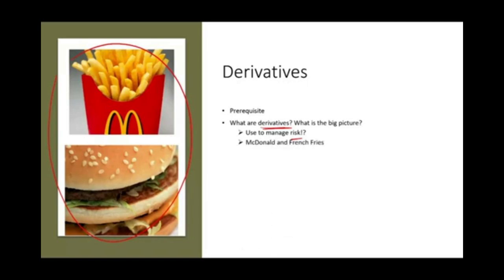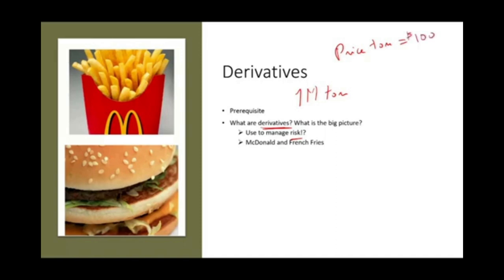Now McDonald's — let's assume, just don't quote me on the numbers, I'm just making this up — let's assume they would need 1 million tons of potatoes. That's what they need: 1 million tons of potatoes every year. And right now the price per ton — again, I'm just making this number up — the price per ton equals $100. The price per ton now, this is the spot rate.